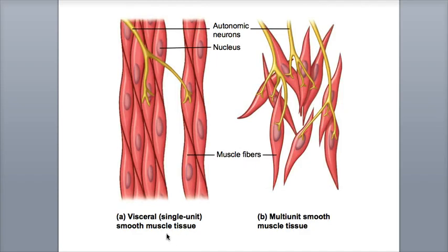Visceral smooth muscle tissue is the most common and is located in the skin, blood vessels, and hollow organs like the organs of the GI tract, including the stomach and intestines, and the urinary bladder. The smooth muscle fibers are attached to each other in an end-to-end arrangement and contain gap junctions to allow propagation of the muscle action potentials. There is one motor neuron that forms neuromuscular junctions with a small group of visceral smooth muscle fibers.